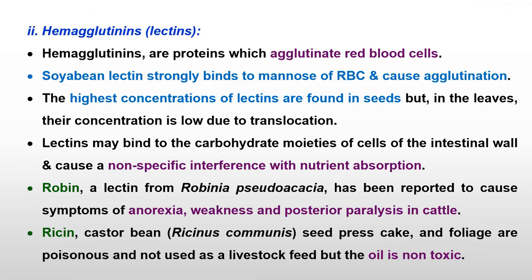Next are hemagglutinins, also known as lectins. Hemagglutinins are proteins which agglutinate RBCs. Soybean lectins bind strongly to the mannose of RBCs, which causes agglutination of RBCs. The highest concentration of lectins is found in seeds rather than leaves and other parts. Lectins may bind to the carbohydrate moiety of cells of the small intestine, which may cause non-specific interference with absorptive function. Robins is also one of the hemagglutinins, and it may cause anorexia, weakness, and posterior paralysis in cattle.